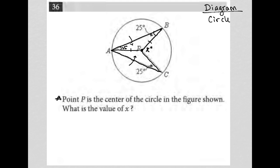That would also mean that triangle APC is also an isosceles triangle. So if this is 25 degrees, this is also 25 degrees. Now, what does that tell me about the entire angle here? Well, it's 25 plus 25, so that whole angle is 50 degrees. Now, how is that useful to figuring out what angle X is?